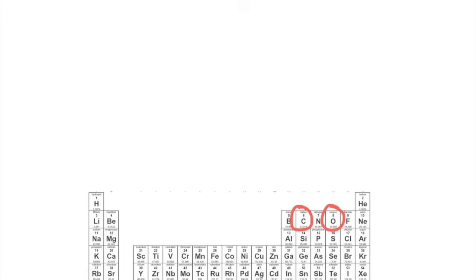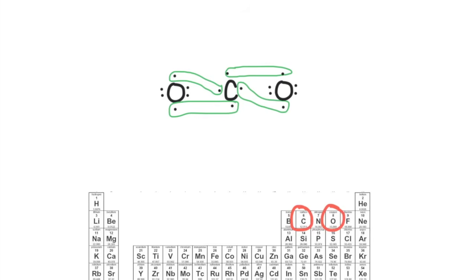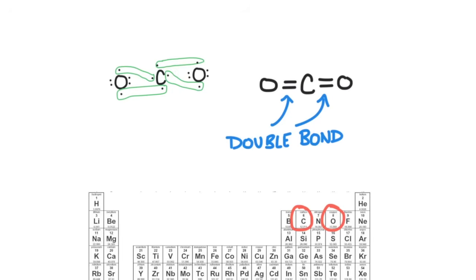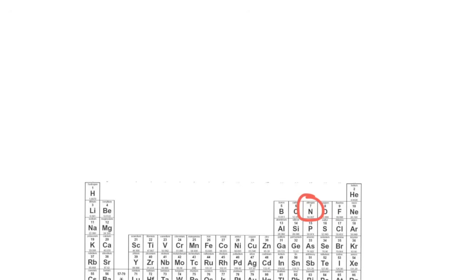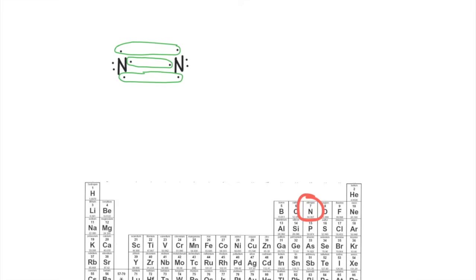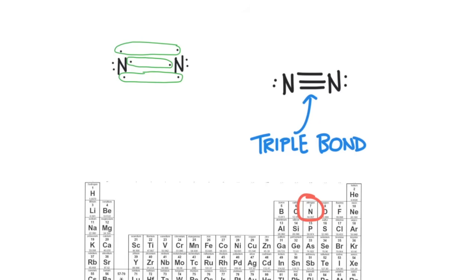Let's try carbon and oxygen. In this case, a double bond will form between the carbon and each oxygen. Each oxygen has two unpaired electrons, so those two unpaired electrons pair up with two electrons from the carbon atom to create double bonds on either side of the carbon, giving CO₂. Let's try nitrogen bonding with another nitrogen atom — a triple bond will form between the two nitrogens. Since each nitrogen has three unpaired electrons, those three unpaired electrons pair up to create a triple bond, giving N₂.